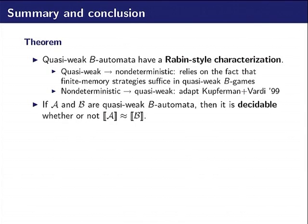All the procedures are effective. It means that if we have a quasi-weak B automata, we can get a B-Büchi and S-Büchi. And if we have a B-Büchi and S-Büchi, we can get a quasi-weak B automata.